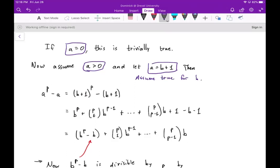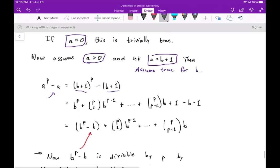Well, A to the P minus A is equal to B plus one, right? This is just substituting B plus one for A. And now using the binomial theorem, we can expand out the B plus one to the P by using these binomial coefficients.